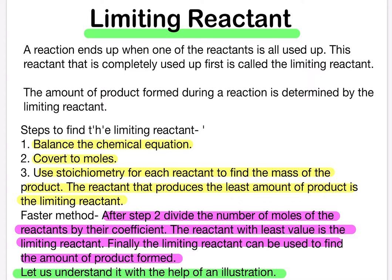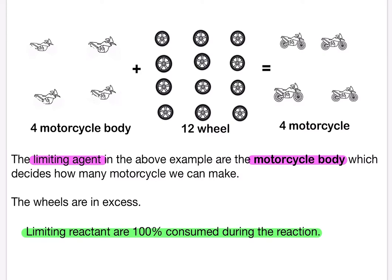Let us understand this with an illustration. We have four motorcycle bodies, 12 wheels, and the outcome is four motorcycles. The limiting part to manufacture a motorcycle is the motorcycle body — it decides how many motorcycles we can make, just like a limiting reagent decides the amount of product formed. The wheels are in excess. The limiting reactant is 100% consumed during the reaction because it is less in amount.